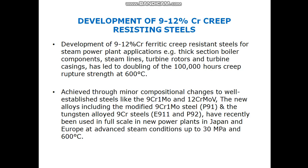These steels have been used in full scale in new power plants in Japan and Europe, with steam conditions up to 30 MPa at 600°C. Their minor composition changes have led to a doubling of creep rupture strength at 100,000 hours at 600°C, making 9 to 12% chromium ferritic creep-resisting steels an attractive candidate material for power plant applications.